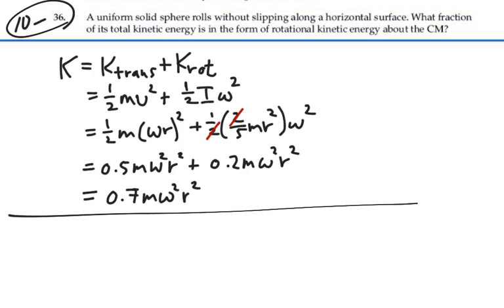Sounds good. So then the ratio of the rotational kinetic energy to the total kinetic energy is going to be point-two m omega squared r squared over point-seven m omega squared r squared.